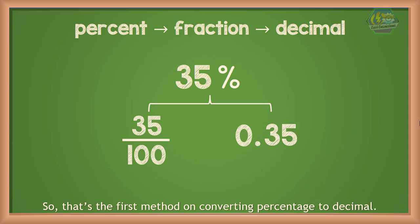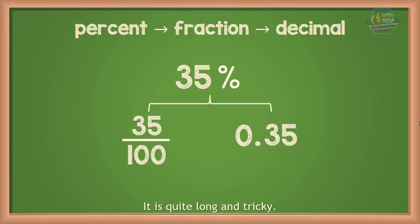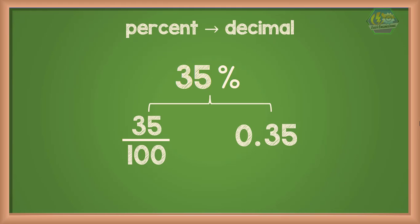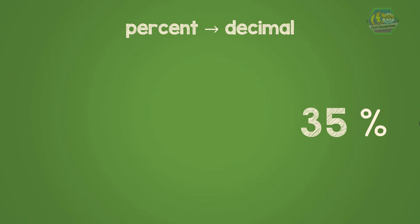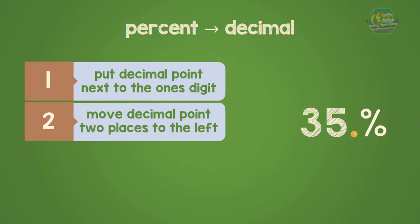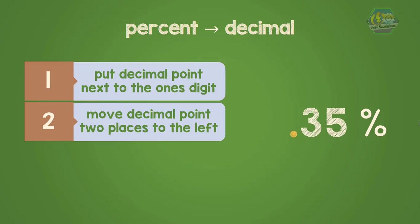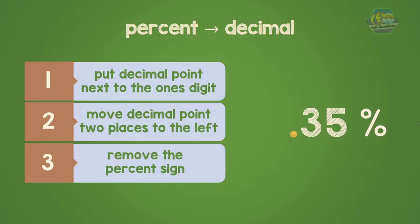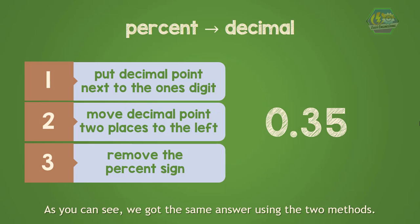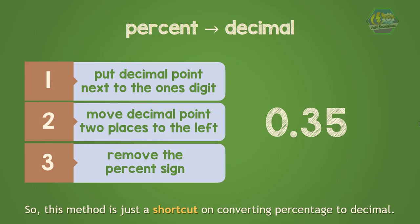That's the first method — it is quite long and tricky. The second method is a shortcut for converting percentage to decimal. Write the number in percent form; for example, 35 percent. Next, put a decimal point after the ones place — in 35, the ones place is the digit 5. Then move the decimal point two places to the left, away from the percent sign. Finally, remove the percent sign. The result is 0.35 — the same answer as the first method.